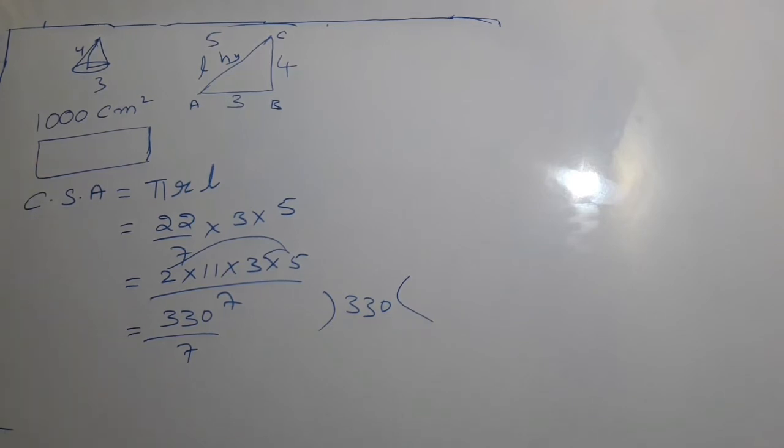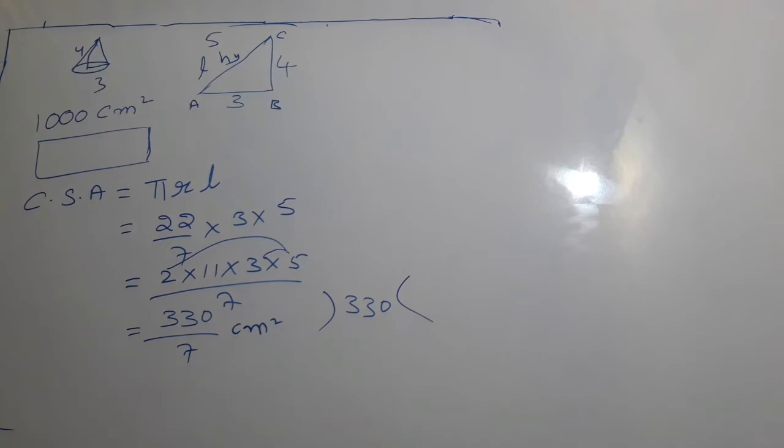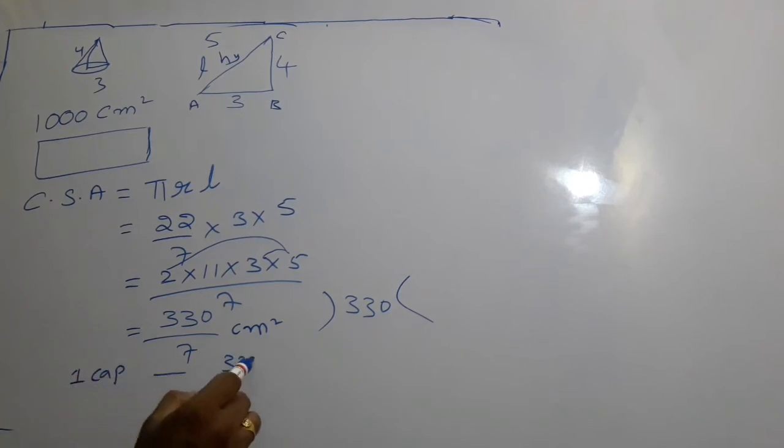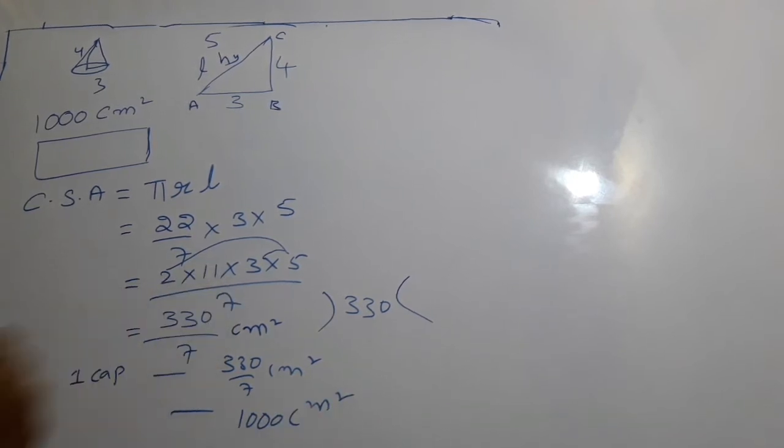Now we will see: one cap needs 330/7 square centimeters. I have 1000 square centimeters available. How many paper caps can be made? Simple: 1000 divided by 330/7.